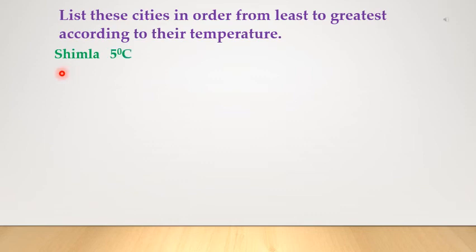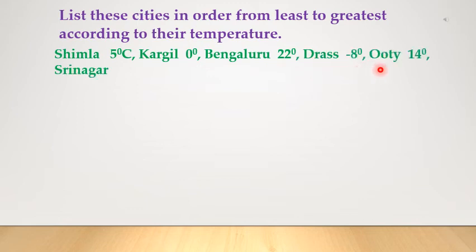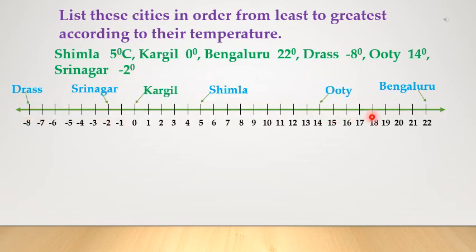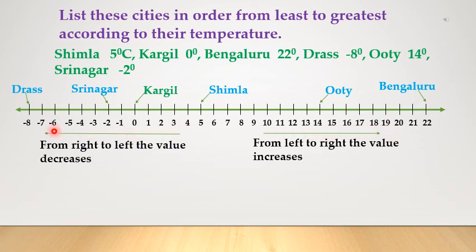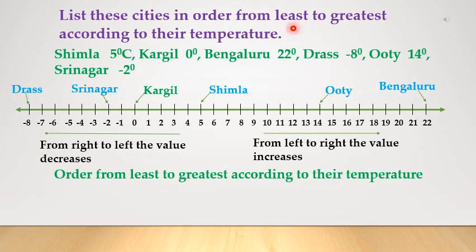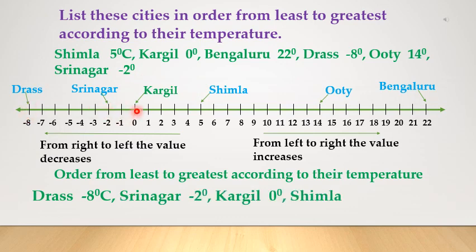Let us take an example: list these cities in order from least to greatest according to their temperature. Since the temperatures are given as integers, a number line will help us solve this problem. As you move right on the number line, integers get larger; as you move left, integers get smaller. The order is: Drass at minus 8°C, Shrinagar at minus 2°C, Kargil at 0°C, Shimla at 5°C, Ooty at 14°C, and Bengaluru at 22°C.